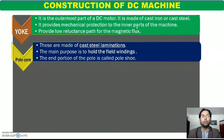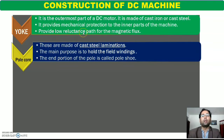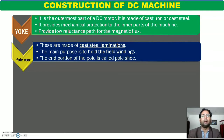अगर yoke नहीं होता तो हमारा machine mechanically इतना protected नहीं होता और mechanically इतना strong भी नहीं होता. सबसे important — yoke के ऊपर ही stator के pole को हम mount करते हैं. और जो yoke होता है वो हमेशा lower reluctance path provide करता है magnetic flux को. यह special point है जो DC machine के case में होता है: DC machine एक ऐसा machine है जिसके stator यानि yoke में flux circulate होता है. Except DC machine, किसी other machine में flux circulate नहीं होता उसके yoke या frame में. इसमें stator में constant flux होता है, इसलिए EMF induced नहीं होता — यानि उसके frame में कोई current नहीं होता.